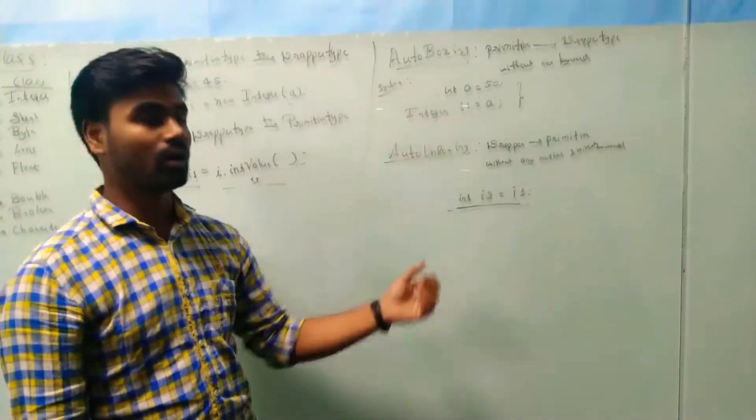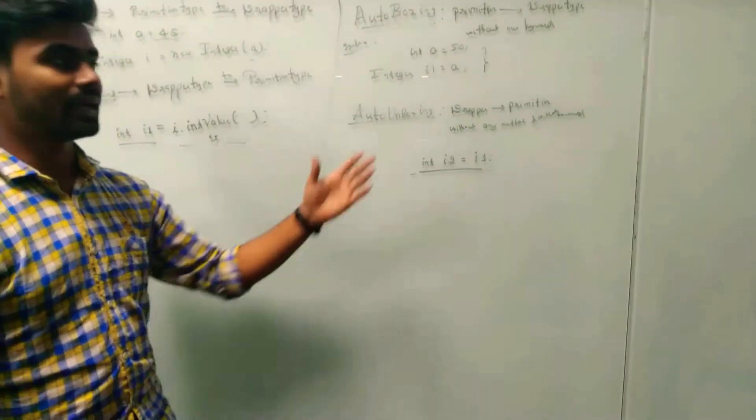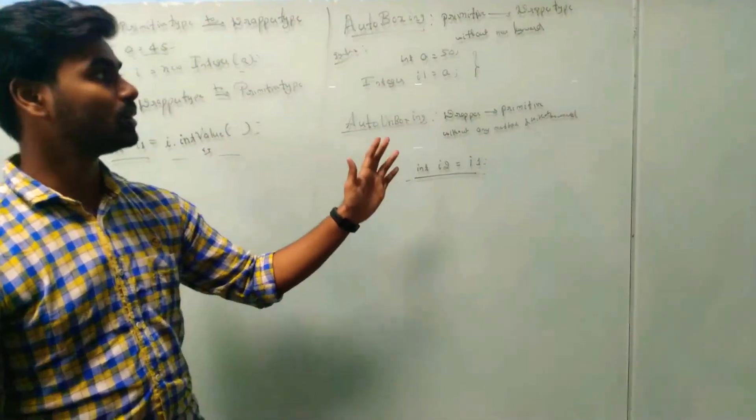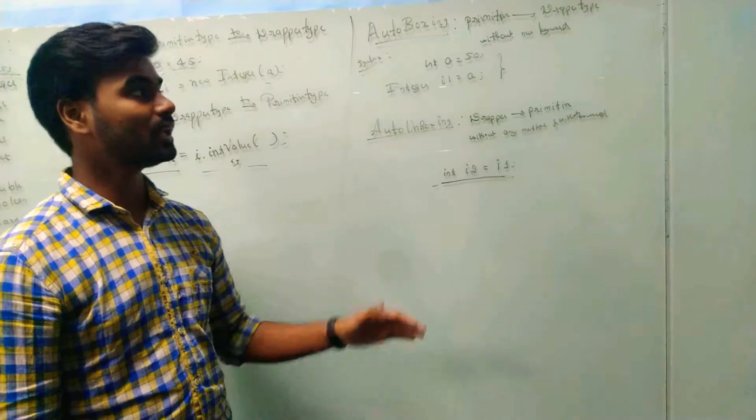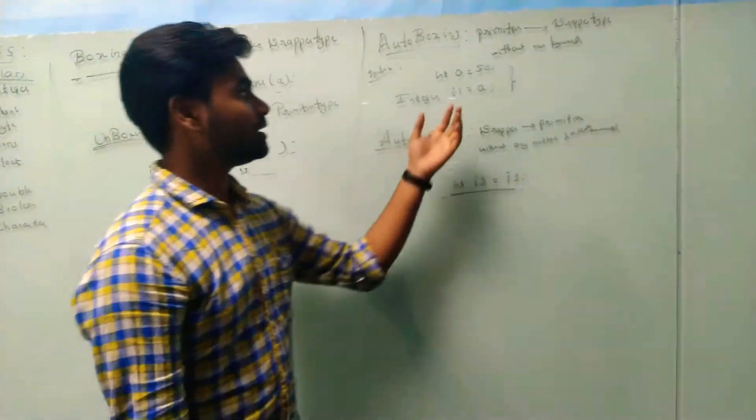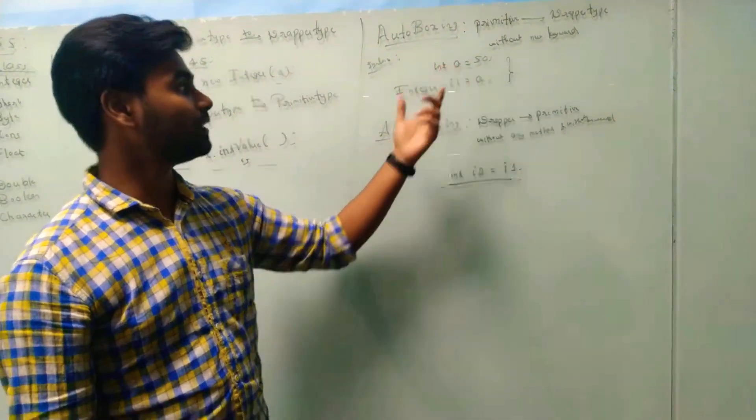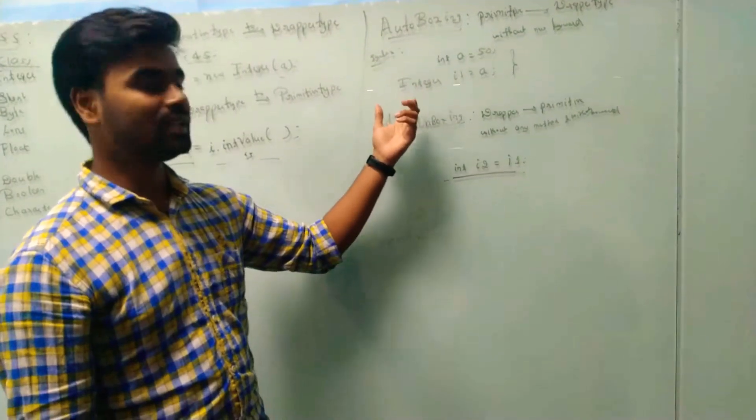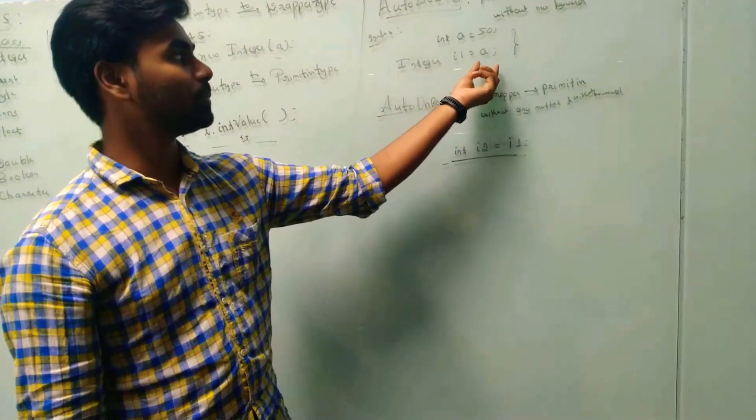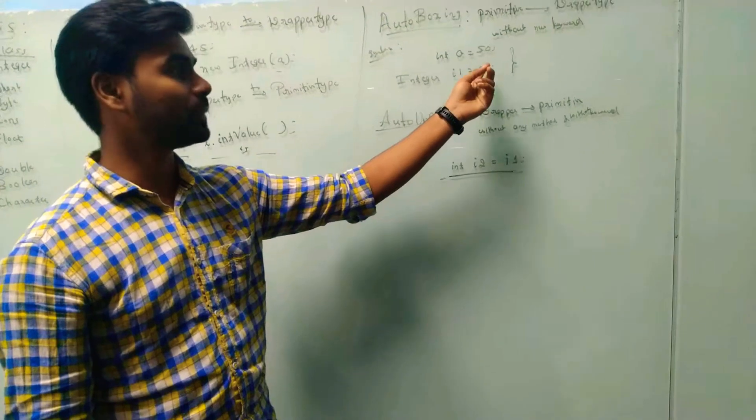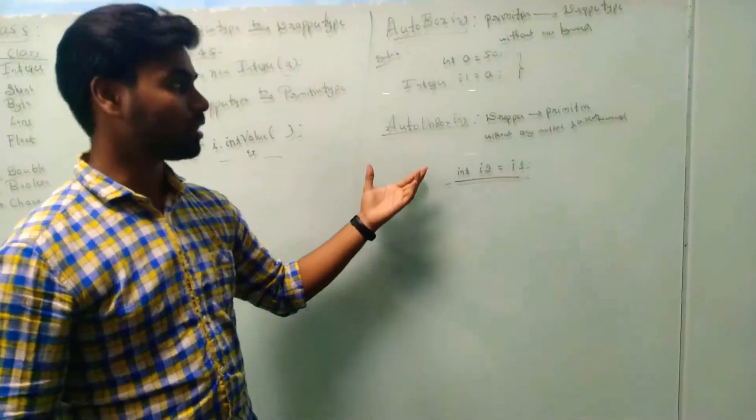Coming to auto-boxing, it will directly convert primitive type to wrapper type without using any keywords like new. First, utilizing the value directly, Integer should be stored here. It should be printed. This value should be taken here and printed.